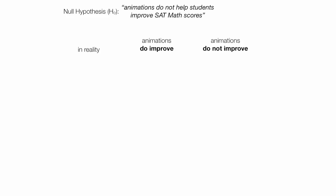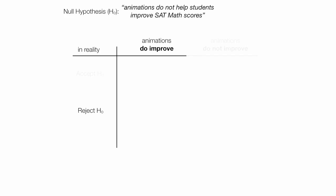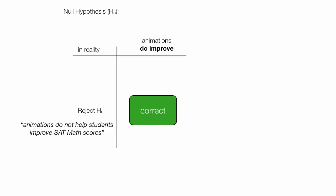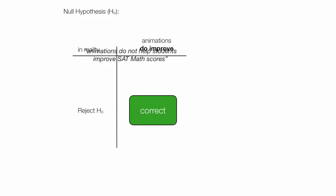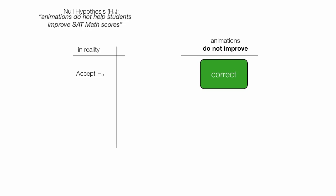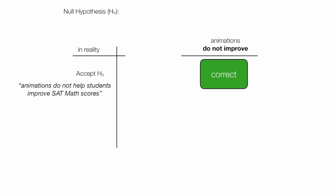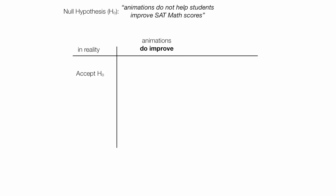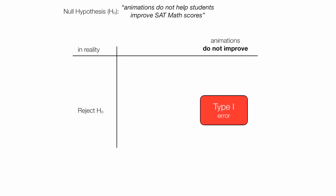In reality, the columns represent: animations do improve, and animations do not improve. I can either accept the null hypothesis or reject the null hypothesis. Rejecting the null hypothesis is the correct decision when animations do improve, because I'm rejecting the notion that animations do not help students improve SAT math scores. If animations do not help improve test scores, I would accept the null hypothesis. If animations do improve test scores and I accept the null hypothesis, I commit a type 2 error, beta. If my animations do not improve test scores and I reject the null hypothesis, I commit a type 1 error, alpha.